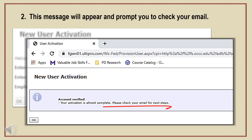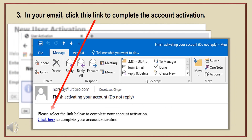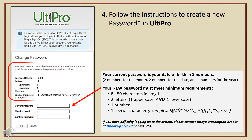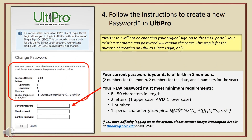Next, you'll get a message notifying you that your activation is almost complete and directing you to your email. Open the email from UltiPro and click the link to complete your account activation. You're on the final step in the activation process — just follow the instructions and you're well on your way.